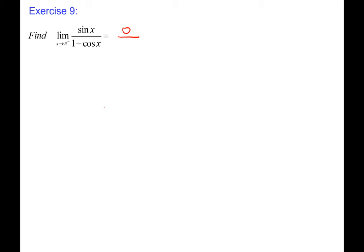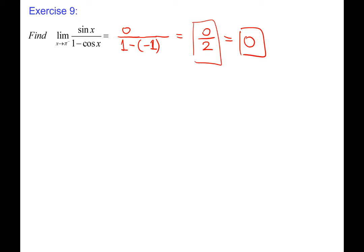Exercise number 9: limit as x goes to π from the left of sin(x)/(1−cos(x)). Substituting π: sin(π) = 0 and cos(π) = −1, so 1−cos(π) = 1−(−1) = 2. We have 0/2 = 0. No indeterminate form here — we are NOT allowed to use L'Hôpital's Rule. The answer is simply 0.